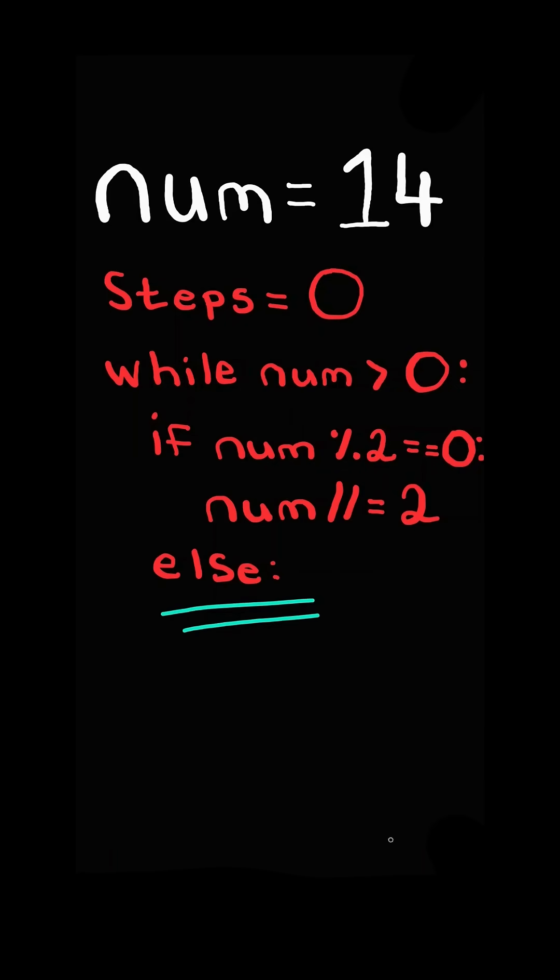Otherwise, if the number is odd, we subtract one. And lastly, we increment the steps taken. And we repeat this process until num is zero.